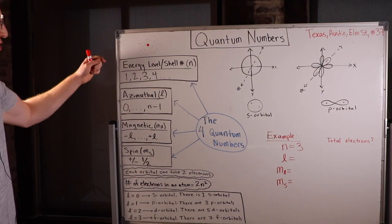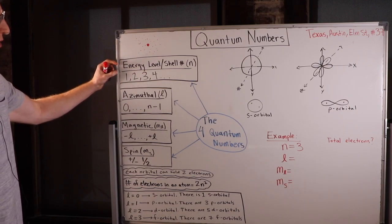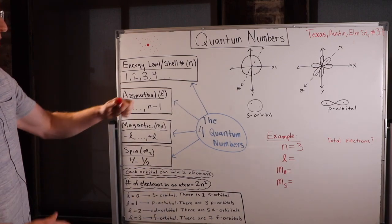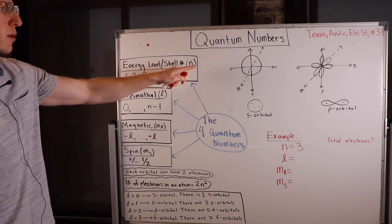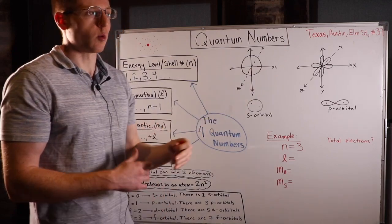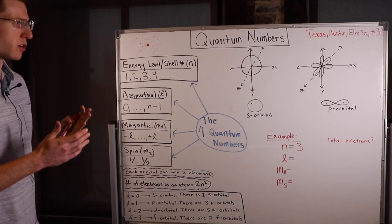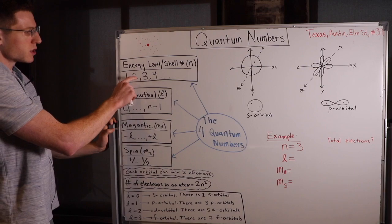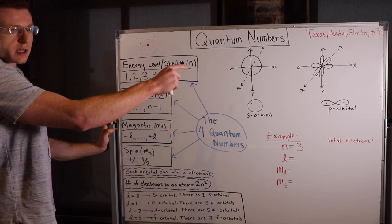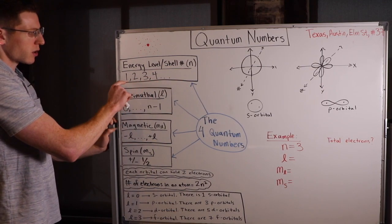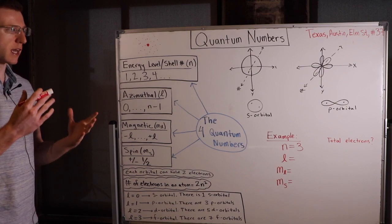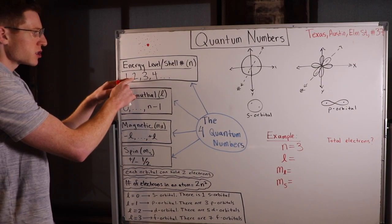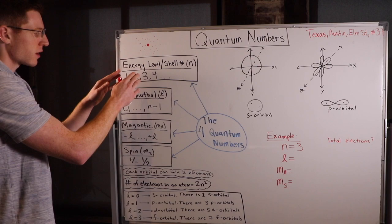The most general thing you can know about an electron's location is its energy level or shell number, and we denote this with the letter N. This is like knowing the electron's state — what state does the electron live in? These numbers go from 1, 2, 3, 4, and so on — they're whole number integers starting at 1, going up as high as you can. So we pick an energy level or shell number for a specific electron.